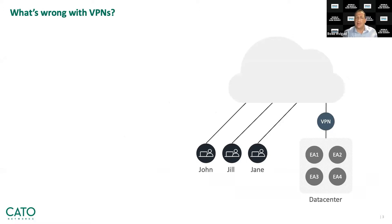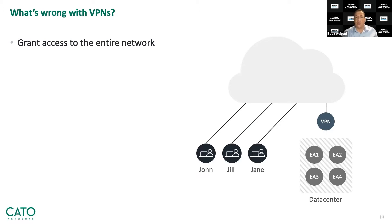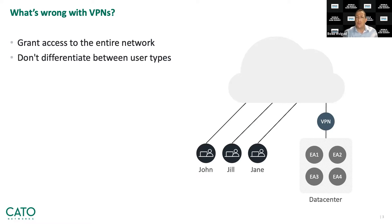What's wrong with VPNs? VPNs use a castle-in-moat approach, where an authenticated user is granted access to the entire data center. For example, if Enterprise Application 1, EA1, is an internal HR department application and John works for R&D, we don't want to enable John to access it. Secondly, VPNs don't differentiate between user types — for example, direct employees, contract workers, suppliers, and so on. We would like to limit contract workers, for example, to a need-to-access-only policy.